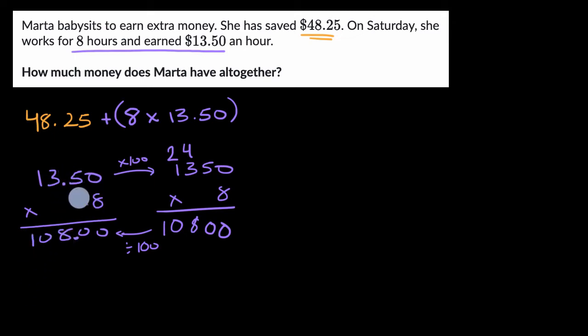And really what you're doing there, some of you might have already learned, when you're multiplying decimals, you can count how many digits are to the right of the decimal amongst both numbers. There's only two up here, one, two. And so when you take the product, you're going to have one, two numbers to the right of the decimal as well. Either way, Marta now has $108.